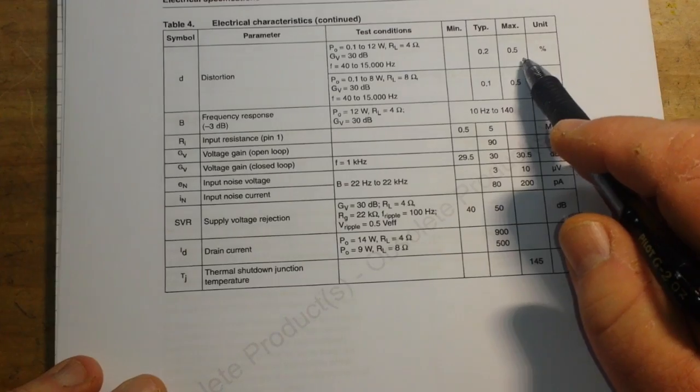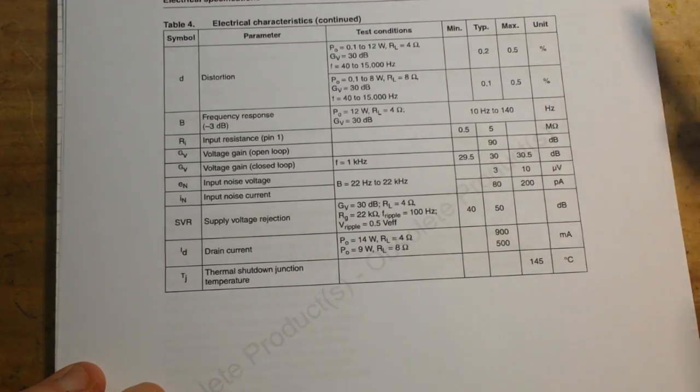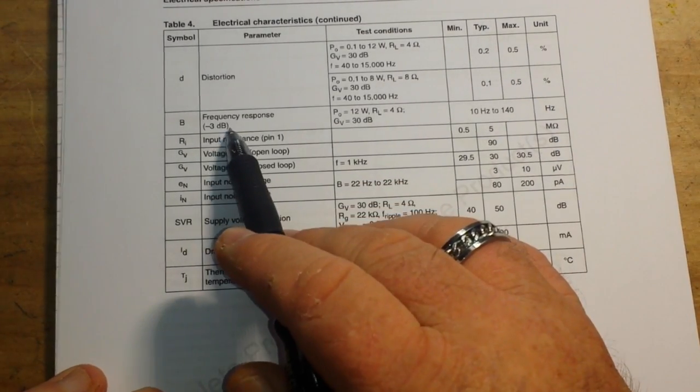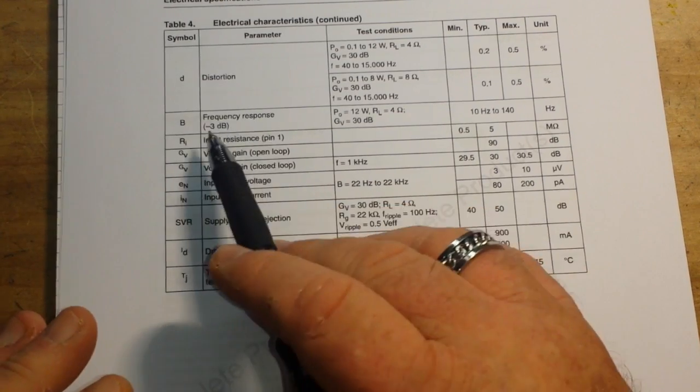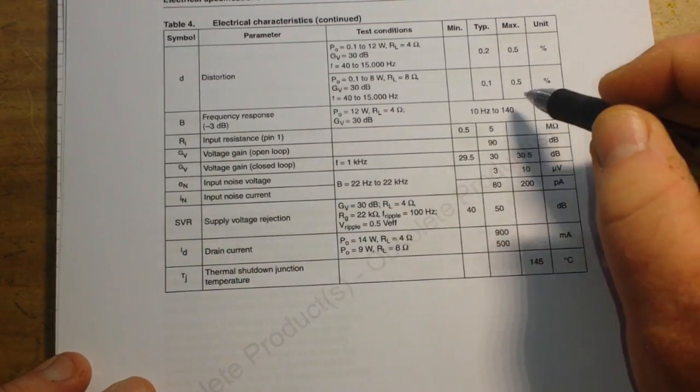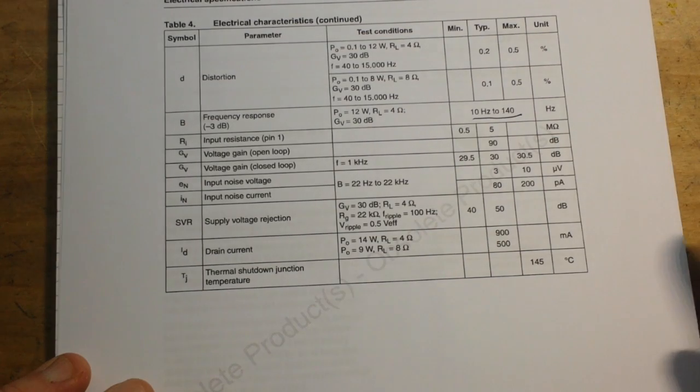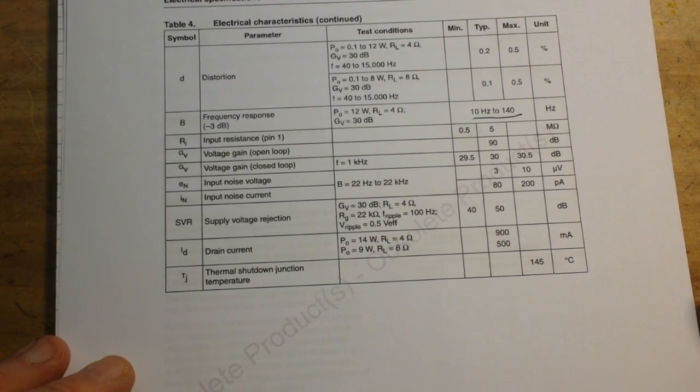It's pretty good on distortion, half a percent. Now our frequency response at minus 3dB, so this is basically we'll call it the low cut frequency, is 10 to 140 hertz depending on how you set it up. That's great for audio stuff.